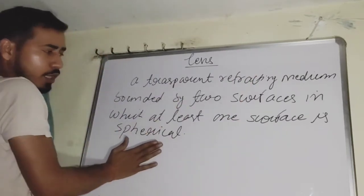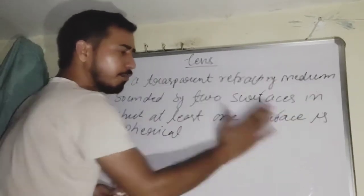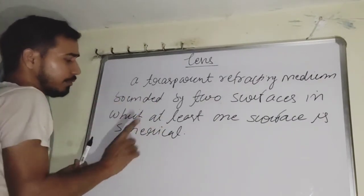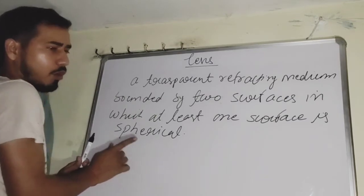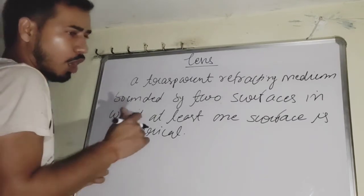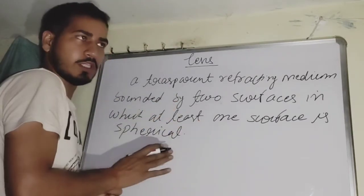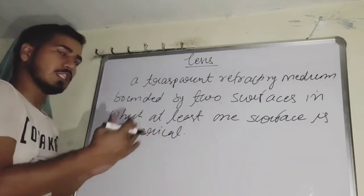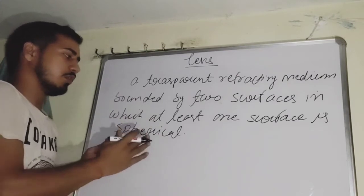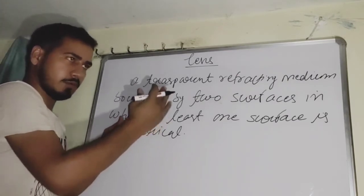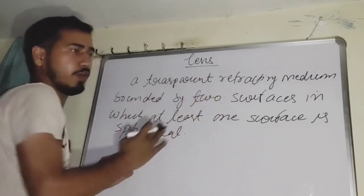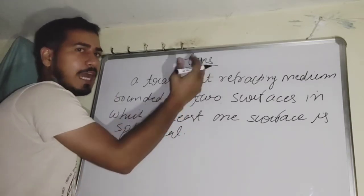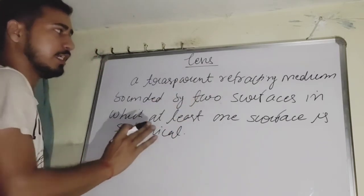The refracting medium is bound by two surfaces: one surface is spherical in shape, and the other one can also be curved or not. When we consider the different shapes of the refracting medium, we get six kinds of lenses.